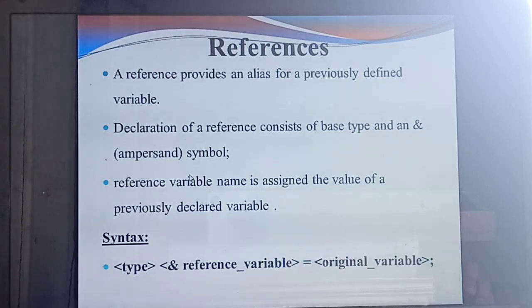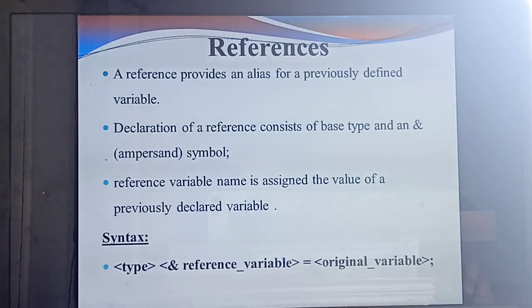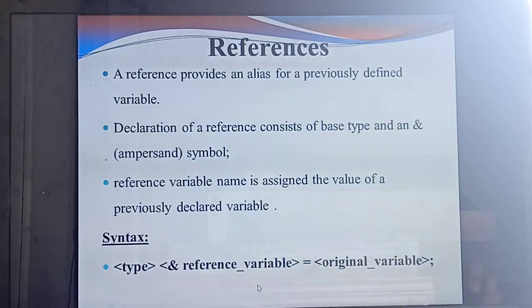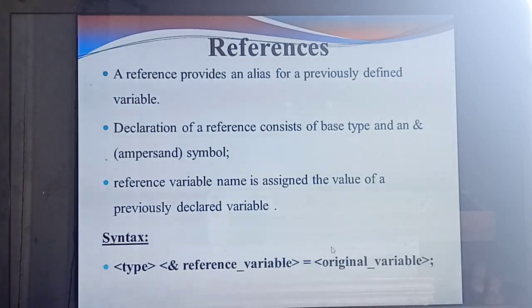From which value you should copy to the reference variable — that original variable you should give. This is the syntax — just like a formula. First, you should give the data type or base type. Next, ampersand symbol. Next, along with the ampersand symbol, the reference variable. Equal to the original variable — from which variable you are copying the value, that variable you should give.